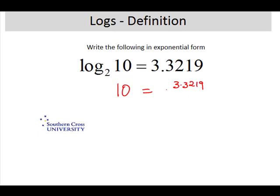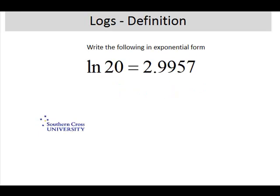This time we've got the natural log of 20 is equal to 2.9957. Natural log, remember natural log implies base e, so we could think of this as being log base e of 20 is equal to 2.9957. So that means that 20 is equal to e to the 2.9957.